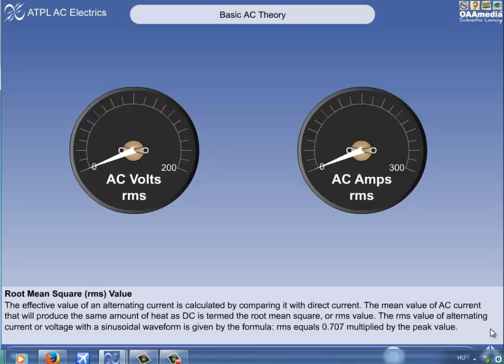Most AC supply values are given in RMS terms. Ammeters and voltmeters measuring AC are normally calibrated in RMS values.